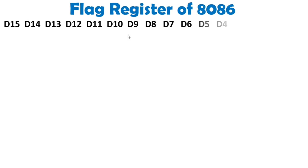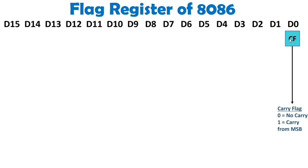As I mentioned, with the flag register of 8086 we have a total of 16 bits of flag. Starting from D0, we have the carry flag, which indicates the status of carry. During execution of an instruction, if a carry occurs, this flag will get set to 1. So the carry flag shows the status of carry during an operation.